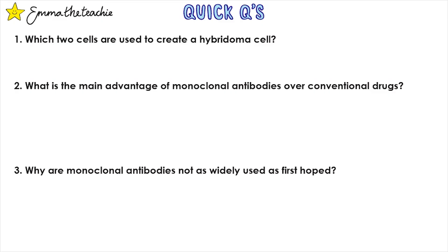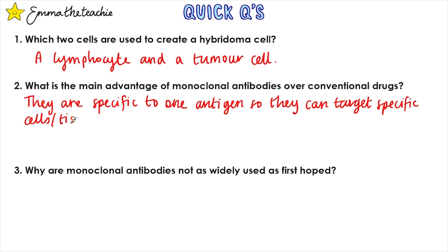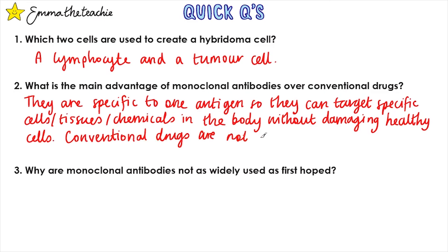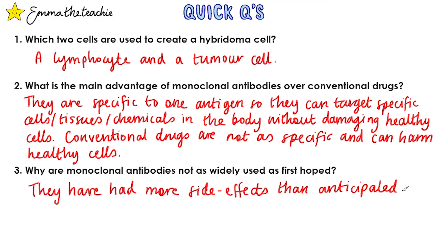Let's test what you've understood. Question 1: Which two cells are used to create a hybridoma cell? A lymphocyte and a tumor cell. Question 2: What is the main advantage of monoclonal antibodies over conventional drugs? Monoclonal antibodies are specific to one antigen, so they can target specific cells, tissues, or chemicals in the body without damaging healthy cells, whereas conventional drugs are not as specific and can harm healthy cells as a result. Question 3: Why are monoclonal antibodies not as widely used as first hoped? They have had more side effects than initially anticipated.